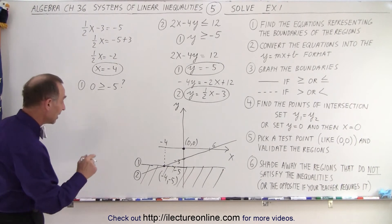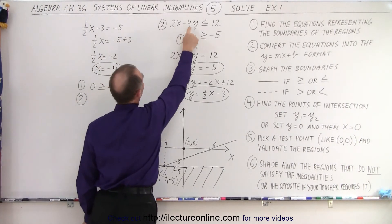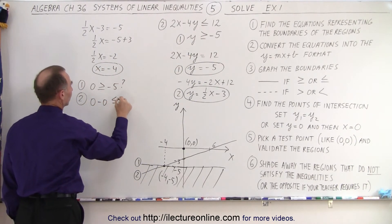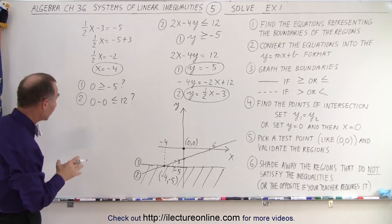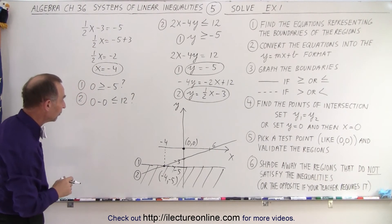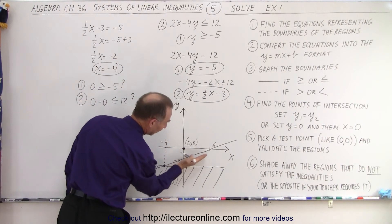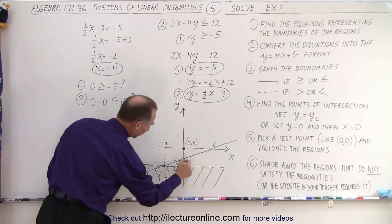We want the region above that horizontal line where we have y equals negative 5. Okay, now for the second one. We plug in 0, 0 for x and y. So we end up with 0 minus 0 less than or equal to 12, question mark. And again, that is a correct statement. 0 is indeed smaller than 12, which means this point lies in the correct region. That means the other side of this line is not in the correct region, so we can go ahead and get rid of that.